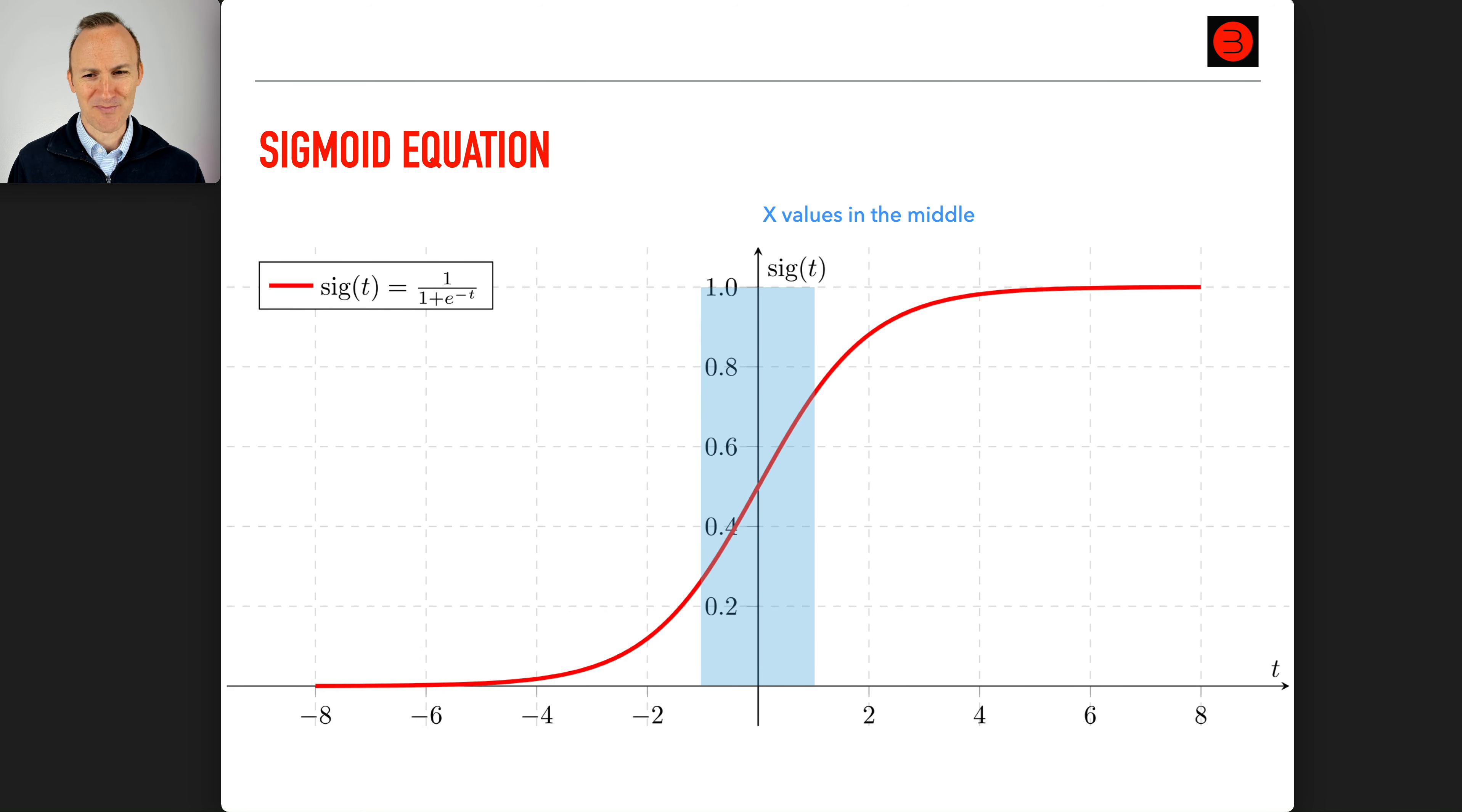The x values in the middle have the greatest uncertainty. If they're greater than zero, map to one; less than zero, go to zero. But they're a little more uncertain. That's where probabilities can be used to interpret the output. The sigmoid ranges from zero to one, and these values may be interpreted as probabilities.